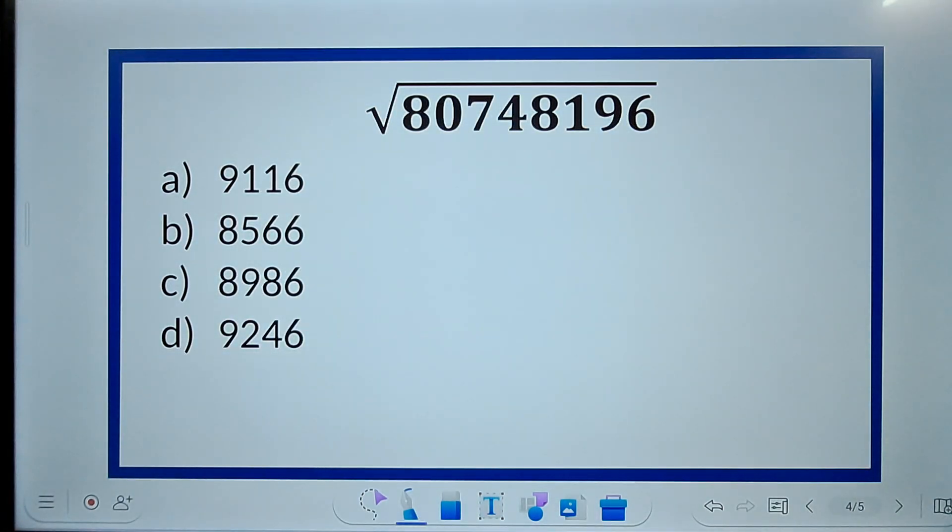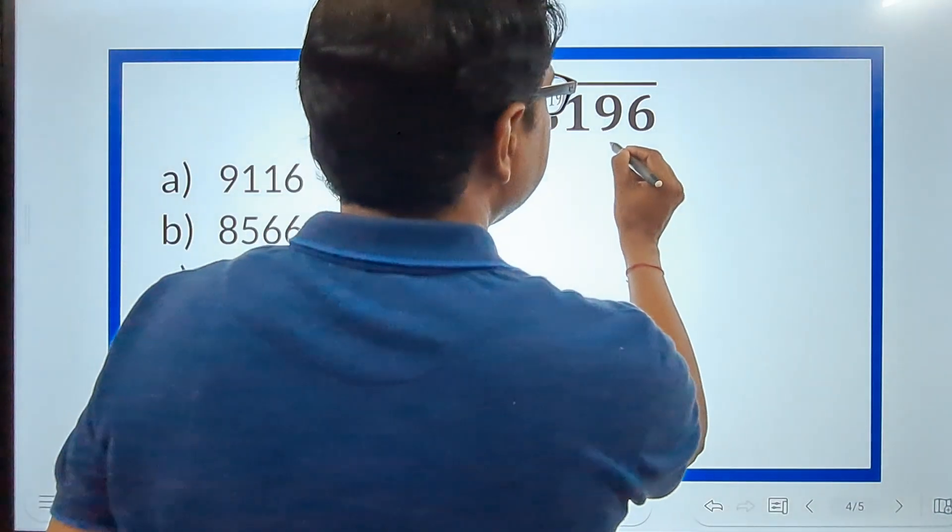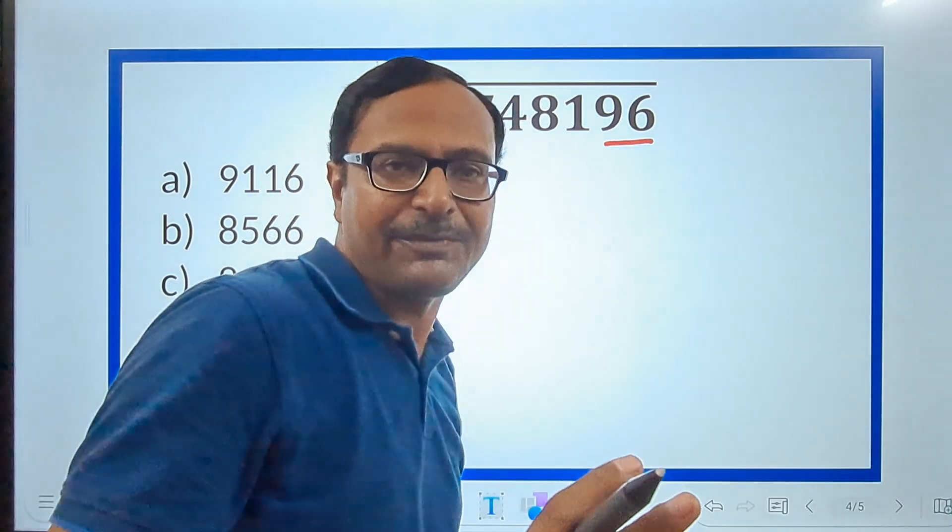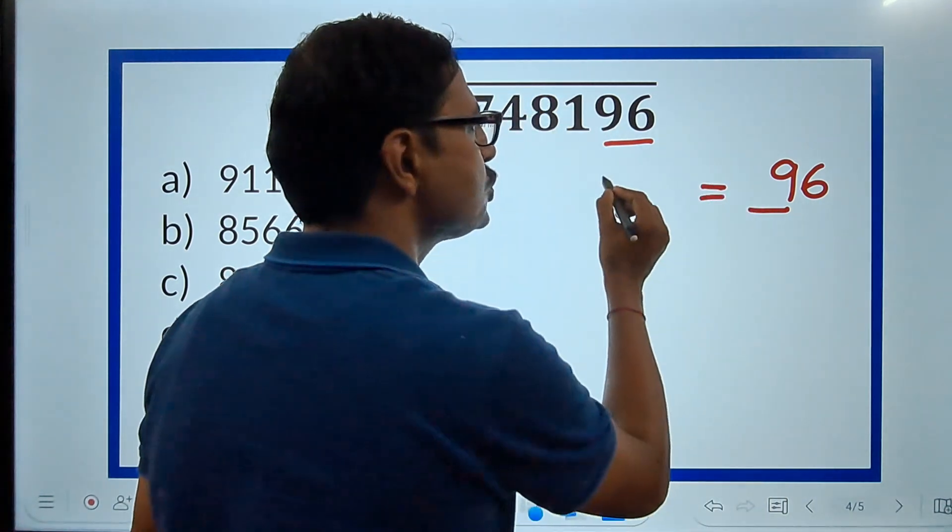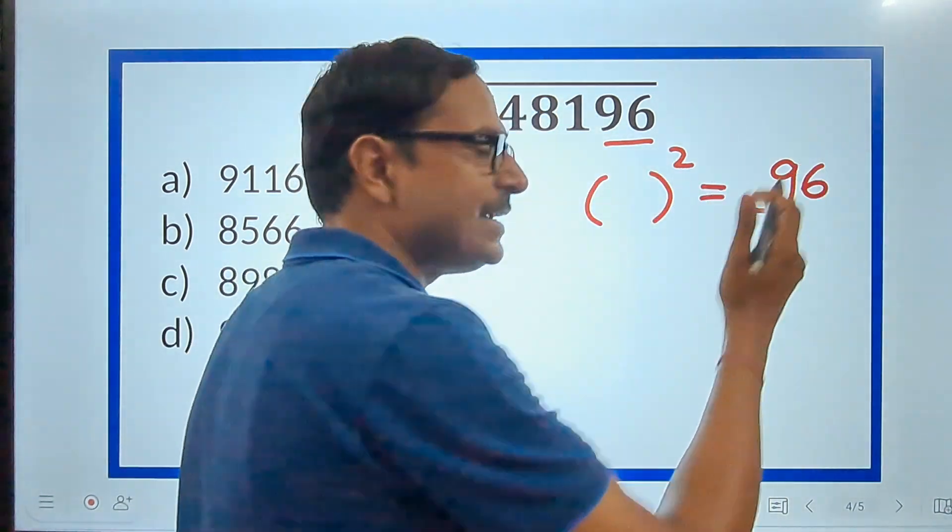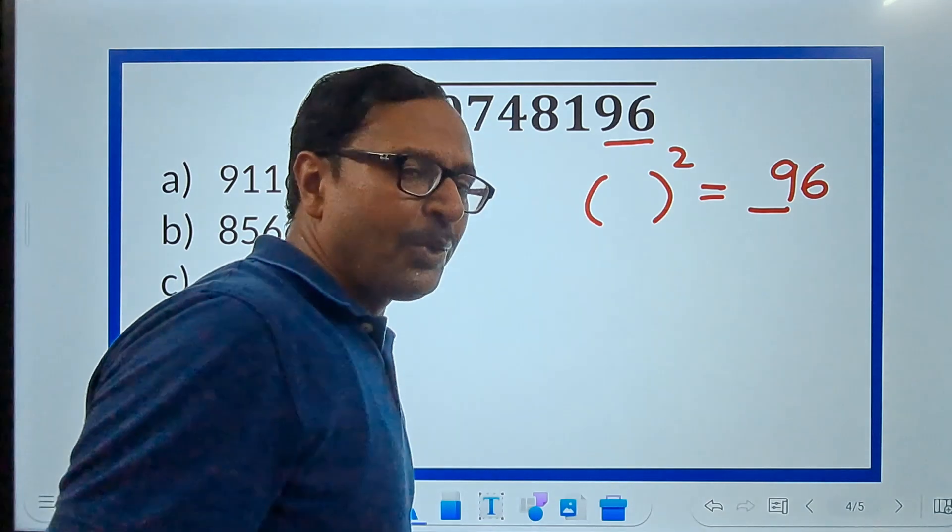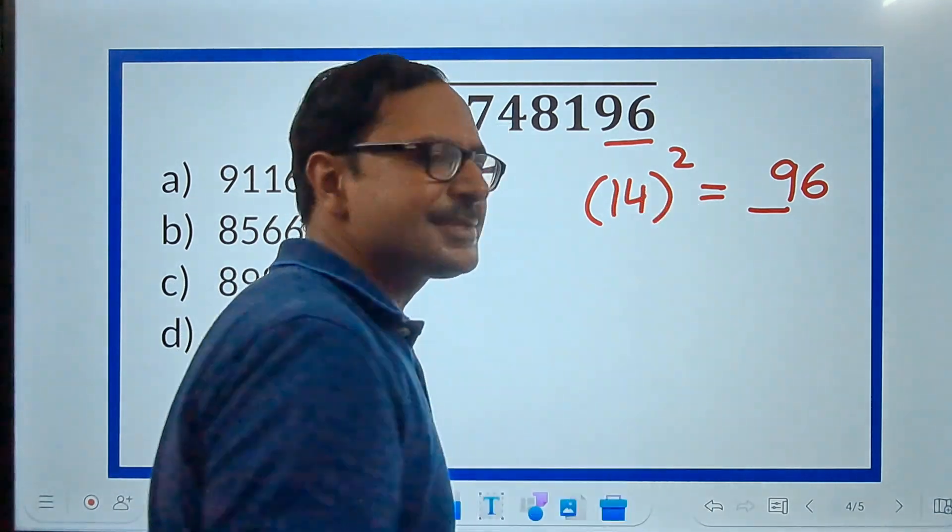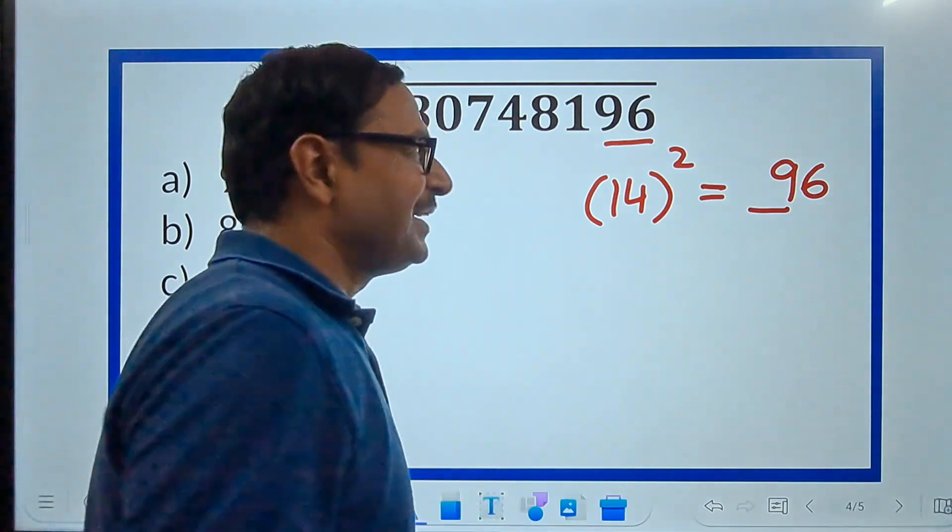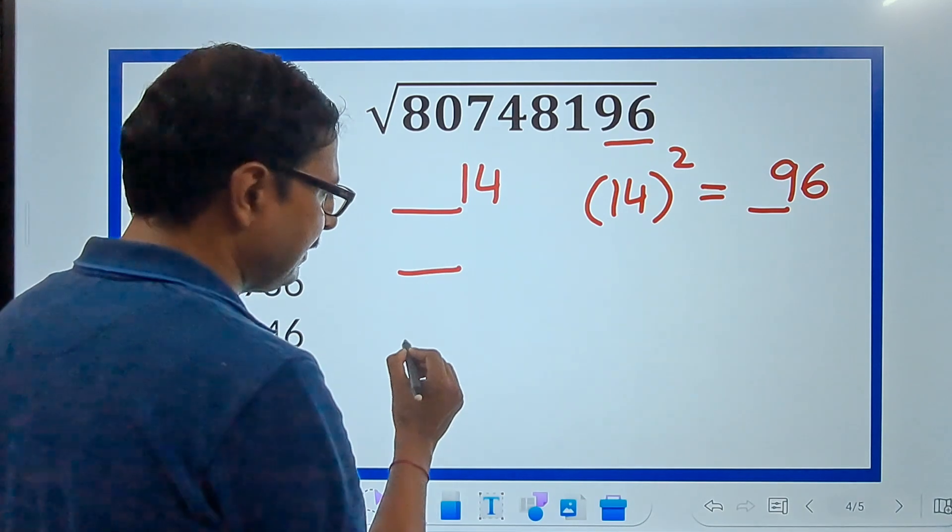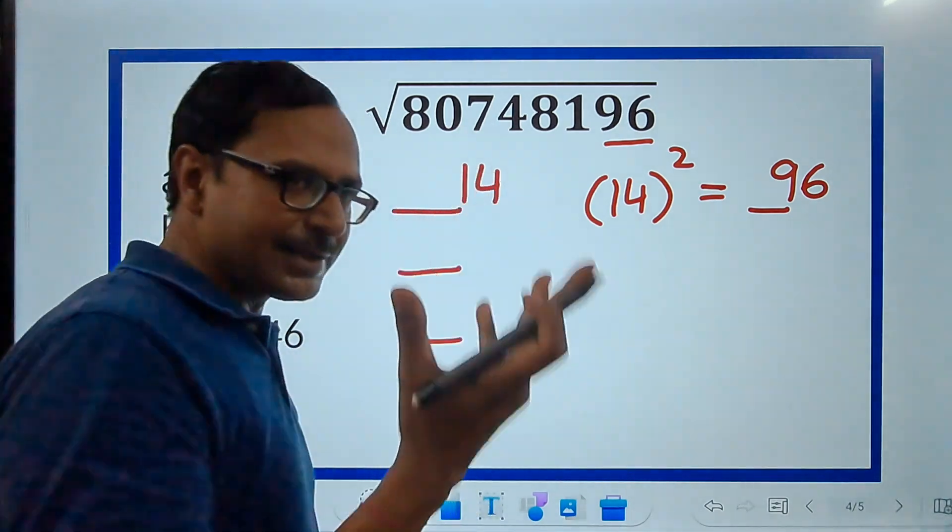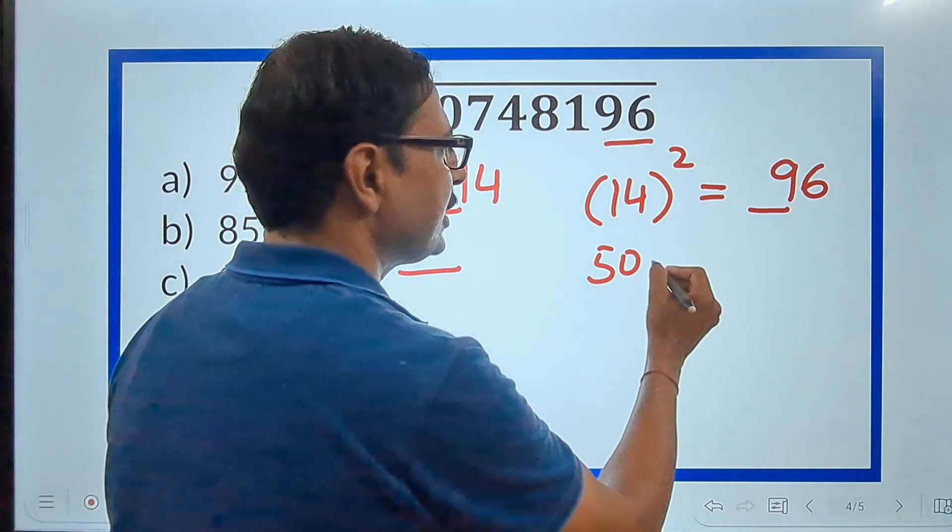So, here we have an example where the number 80748196 ends in 96. Now, 96 is not a perfect square. So, I need a number whose square ends in 96. Do you know 14 square is 196? And therefore, your answer for this question will end in 14 or there are 3 more possibilities. What are they? Now, you know it.